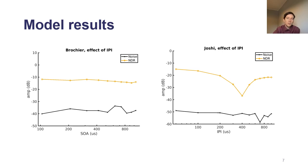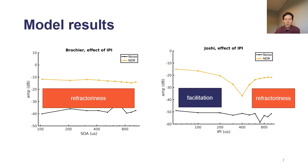An interesting thing is that the mechanism of generation of this distortion varies between the models and IPI. It's actually dominated by facilitation at short IPIs in the Joshi et al. model, and by refractoriness at longer IPIs and also in the Brochie et al. model.